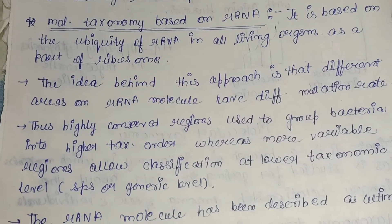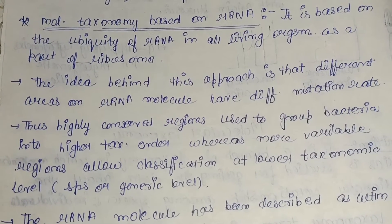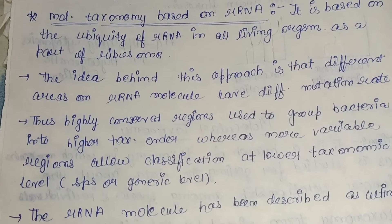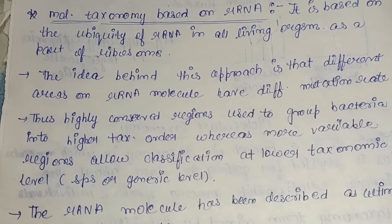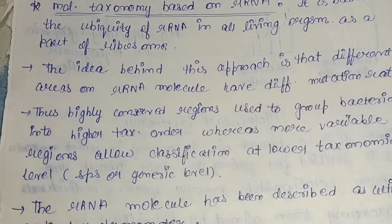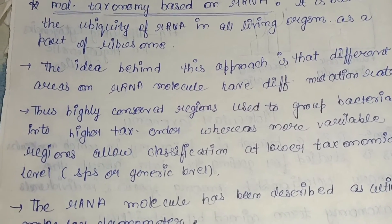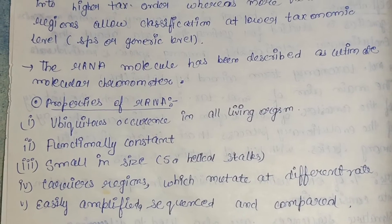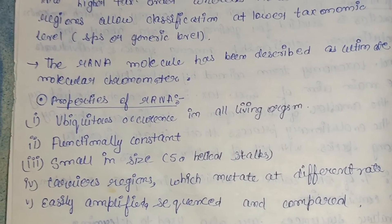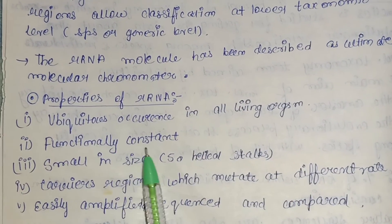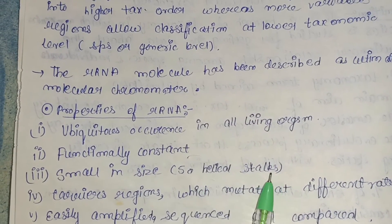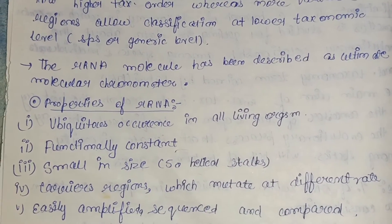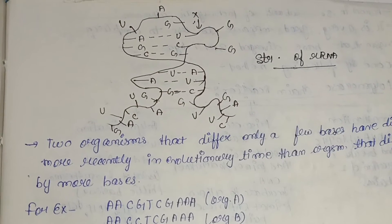The idea behind this approach is that different areas on the rRNA molecule have different mutation rates — they are able to vary differently. Highly conserved regions are used to group bacteria into higher taxonomic orders, whereas more variable regions allow classification at lower taxonomic levels such as species or genus. The rRNA molecule has been described as the ultimate molecular chronometer because of its properties: it is ubiquitous, functionally constant, small in size with only 50 helical stocks, carries regions that mutate at different rates, and is easily amplified, sequenced, and compared.